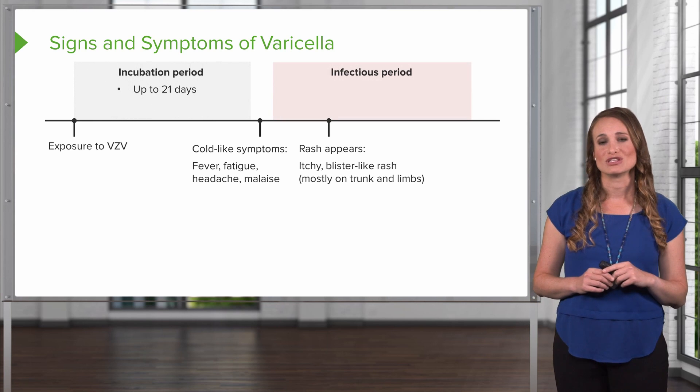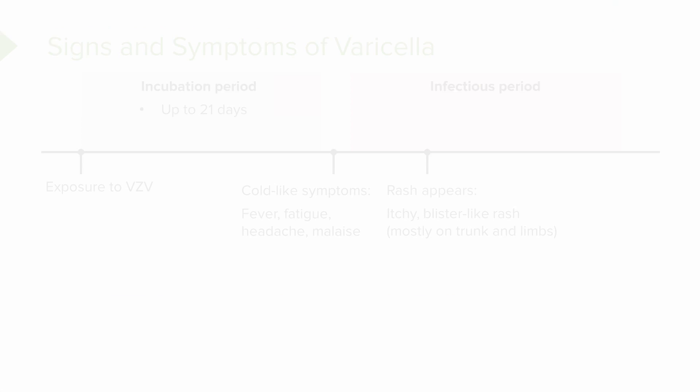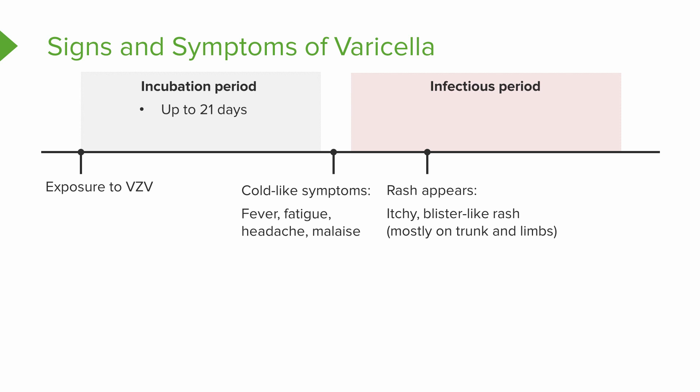Next, the rash is going to appear. This is an itchy, blister-like rash, typically found on the trunk and limbs, though patients can also have lesions in their mouth. They're going to progress through their infectious period until all of these lesions are scabbed, and then the patient will experience complete resolution.